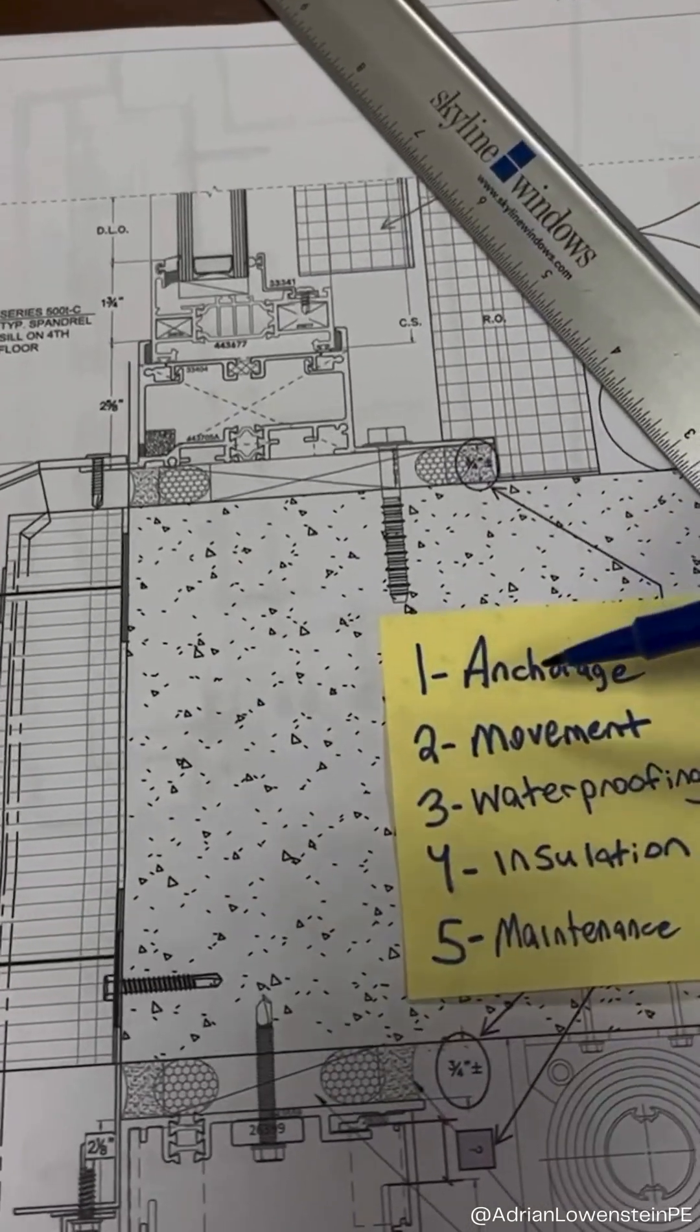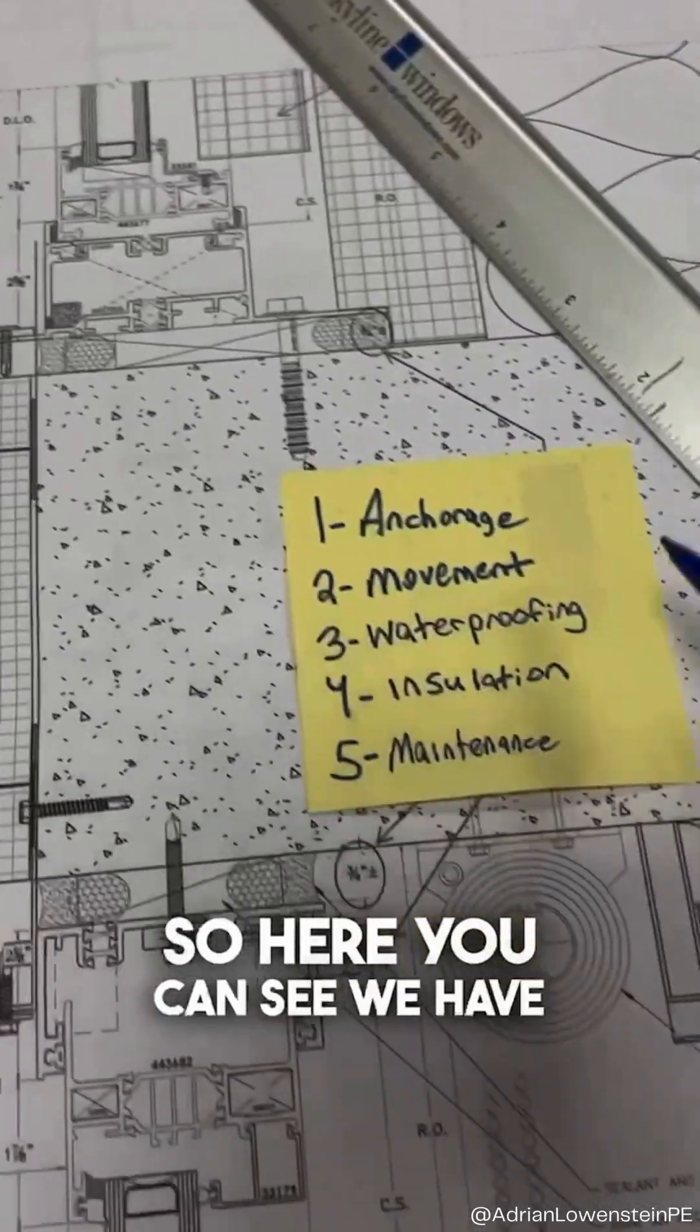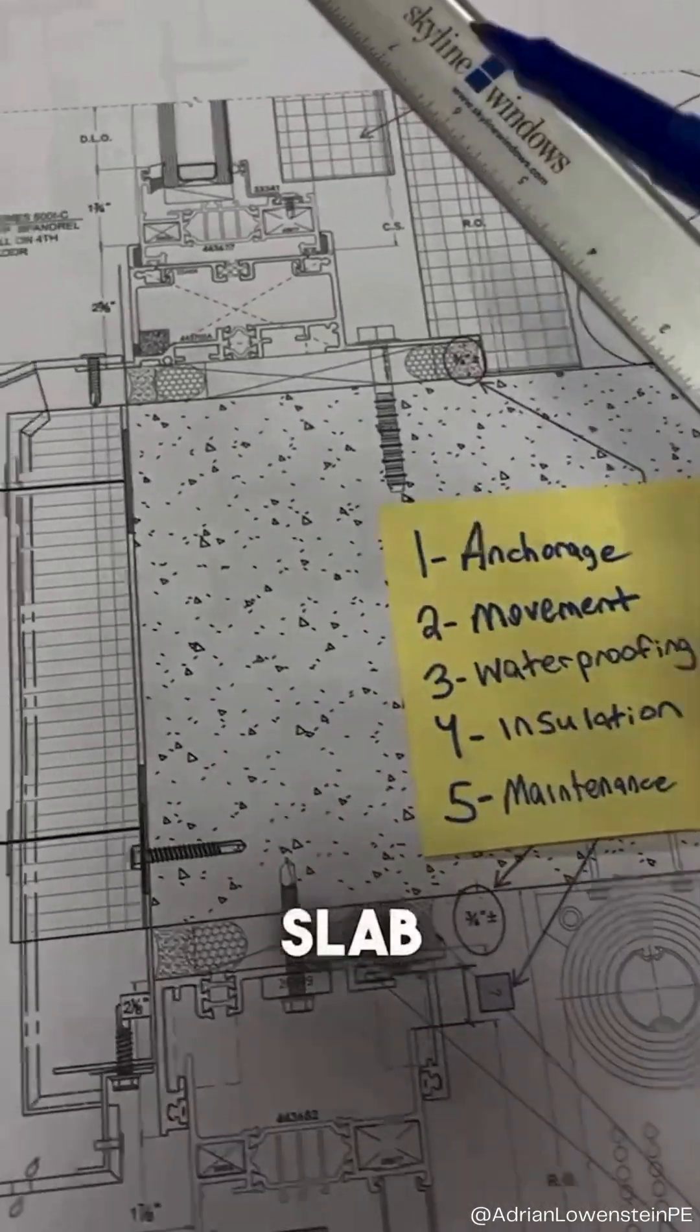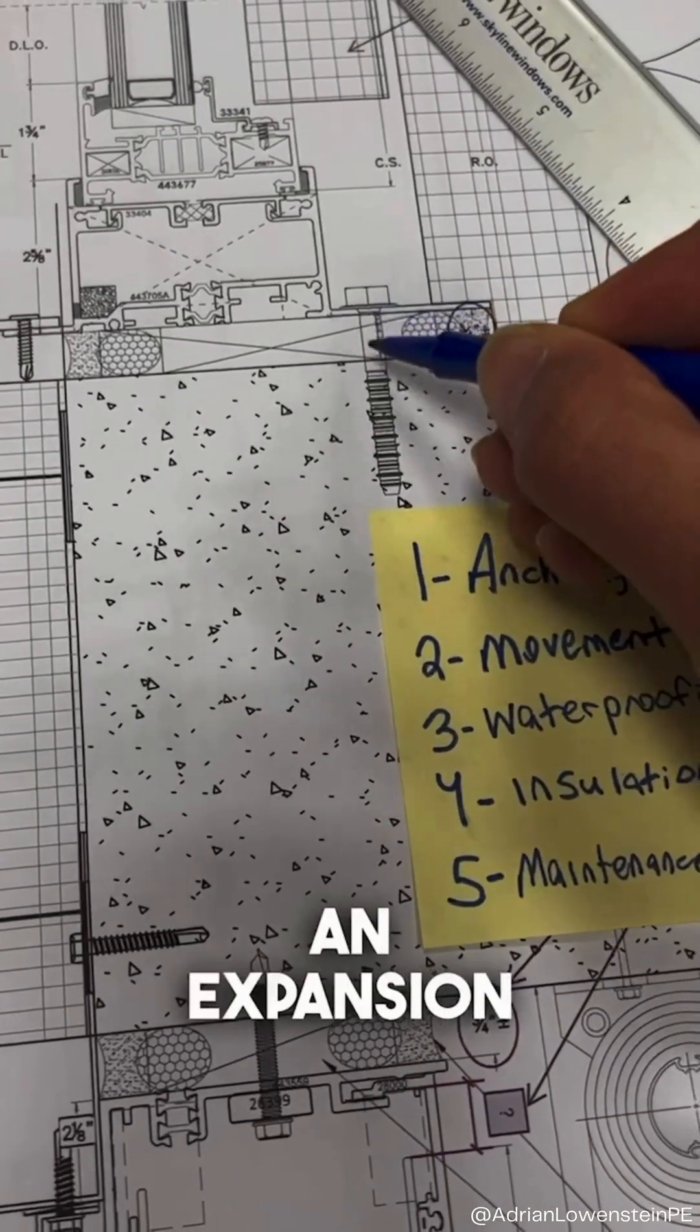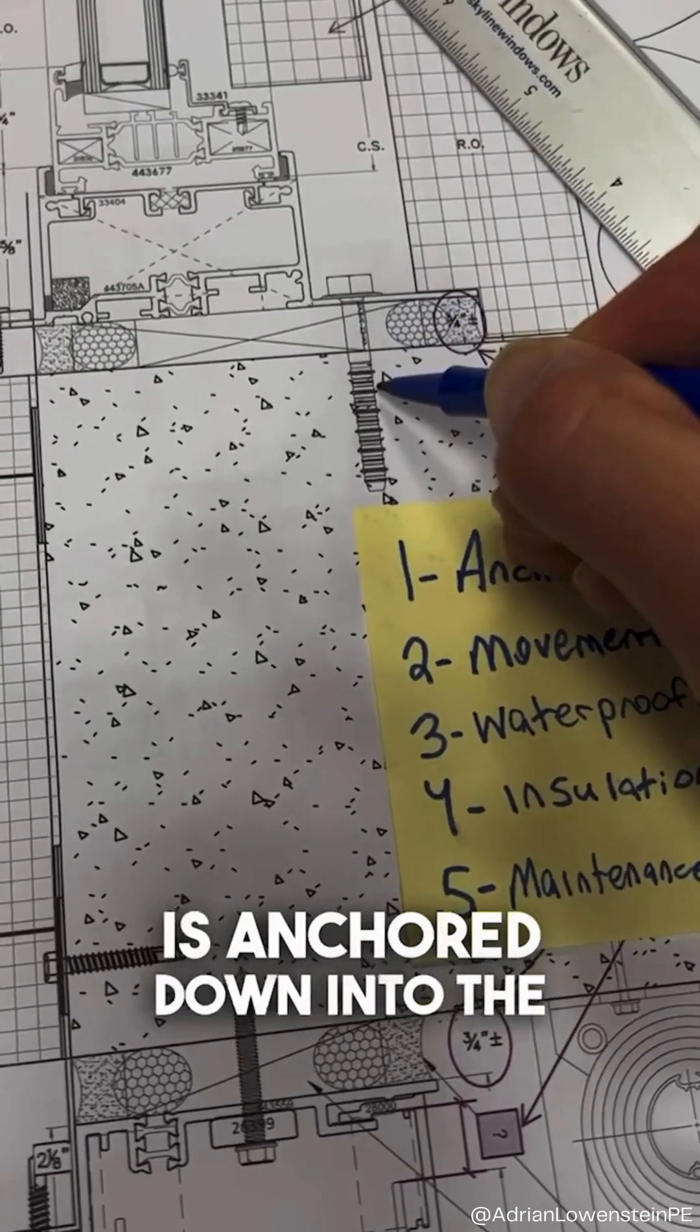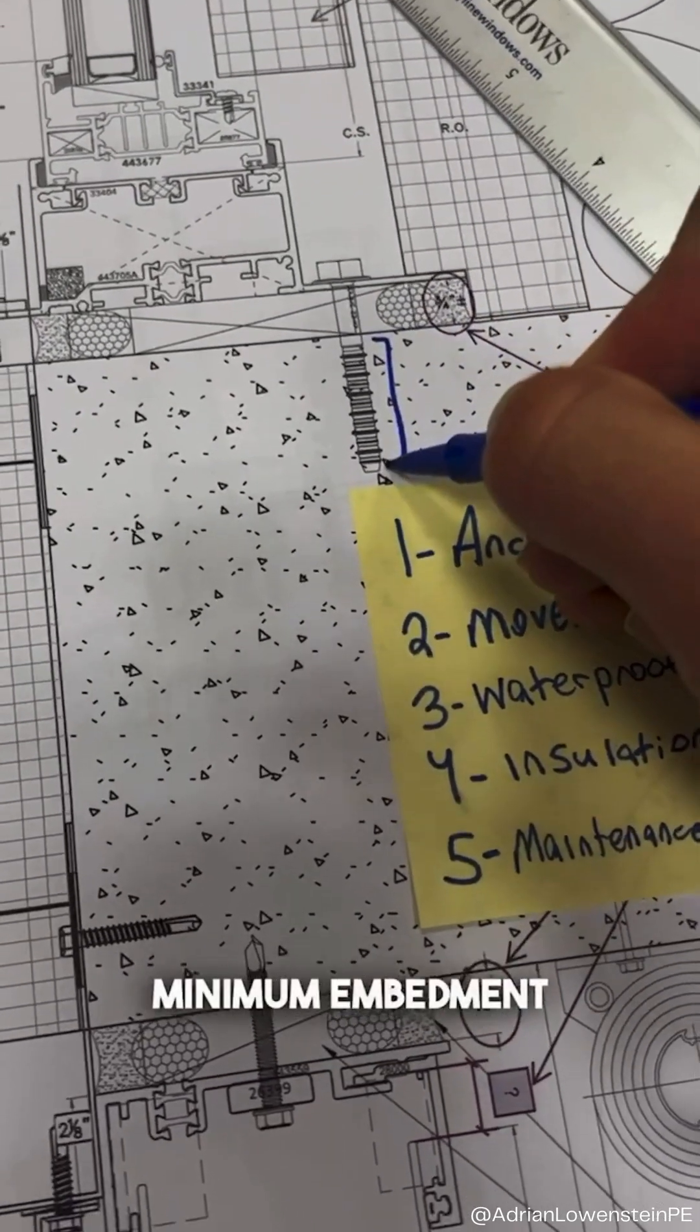So number one, anchorage. How is the unitized assembly anchored to the structure? So here you can see we have our perimeter slab and here you have an expansion anchor that is anchored down into the structure. But you want to look at items like minimum embedment, edge distance,